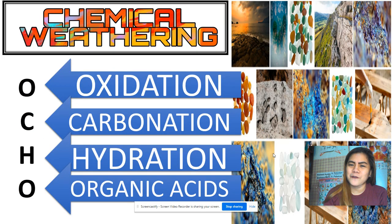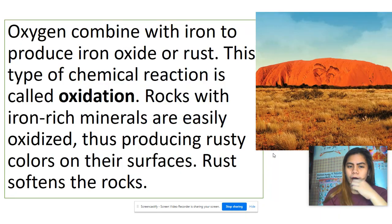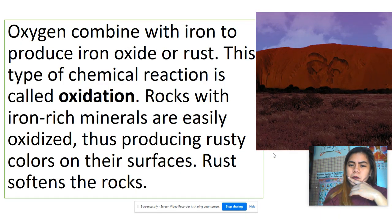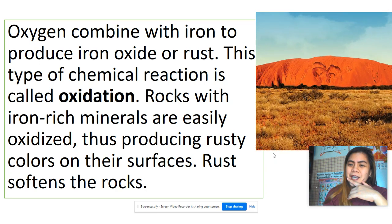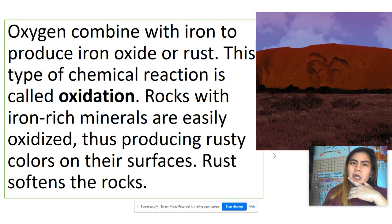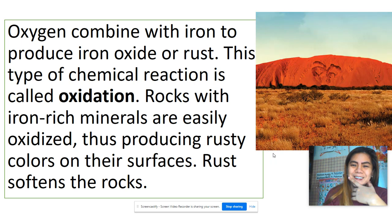In chemical weathering, we will memorize four processes using the acronym OCHO: oxidation, carbonation, hydration, and organic acids. The first is oxidation, where oxygen combines with iron to produce iron oxide, or rust. This is why some rocks appear red in color.